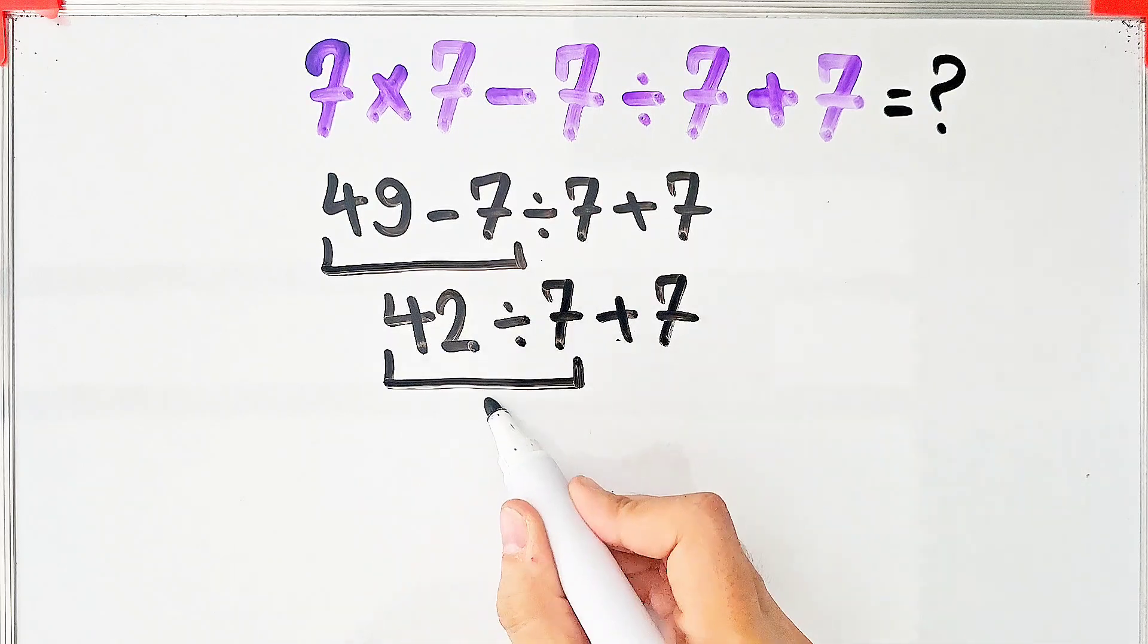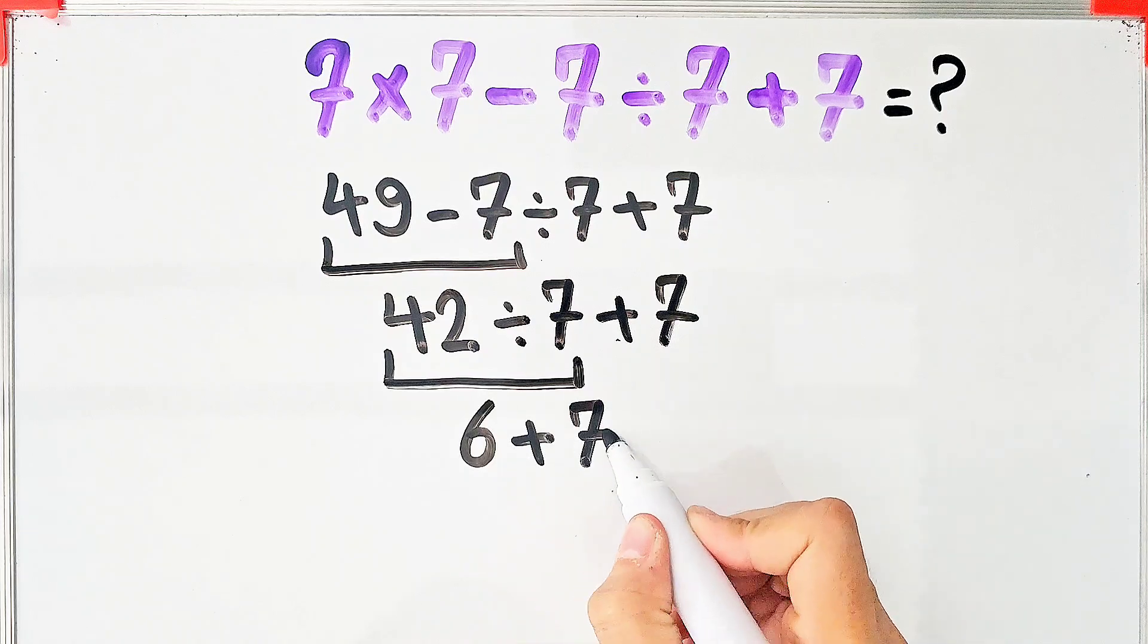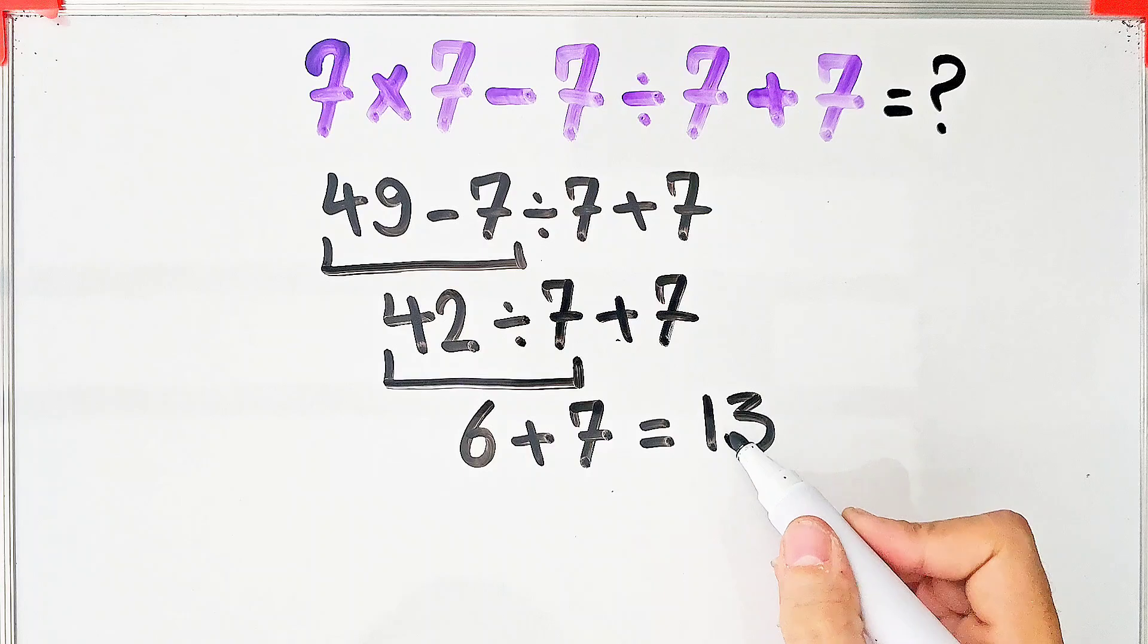6 plus 7 equals 13. But this answer is definitely wrong. Let's solve this question step by step together.